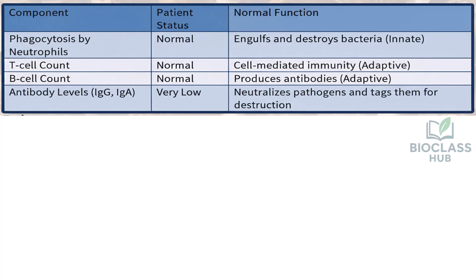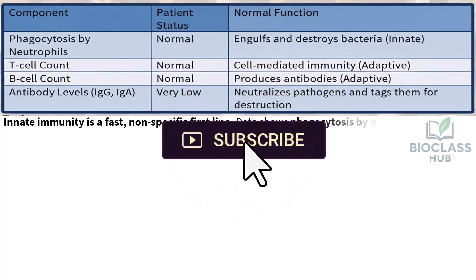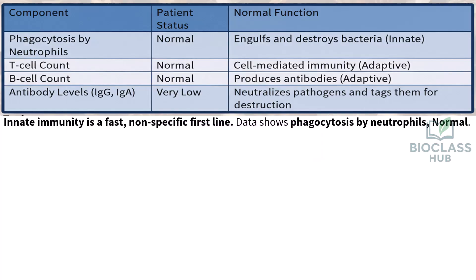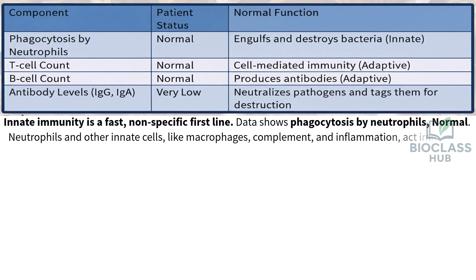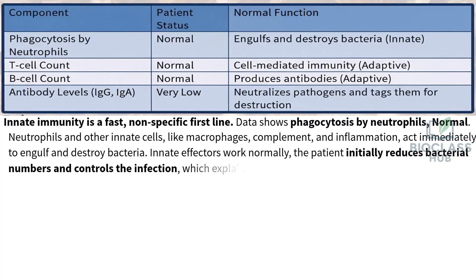Part A. Innate immunity is a fast, non-specific first line — data shows phagocytosis by neutrophils is normal. Neutrophils and other innate cells, like macrophages, complement, and inflammation, act immediately to engulf and destroy bacteria. Innate effectors work normally: the patient initially reduces bacterial numbers and controls the infection, which explains the early control.